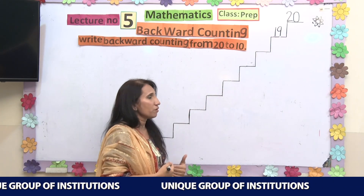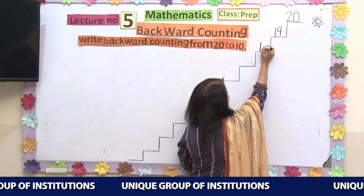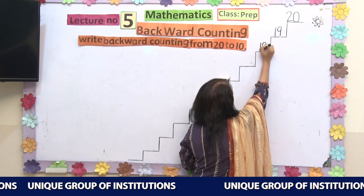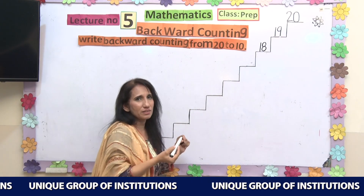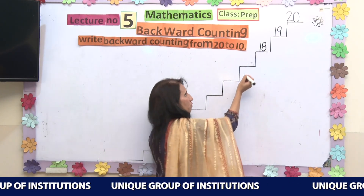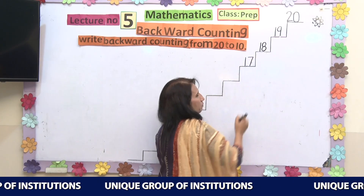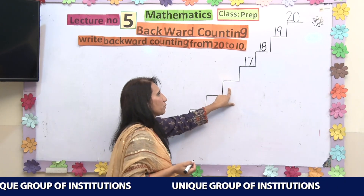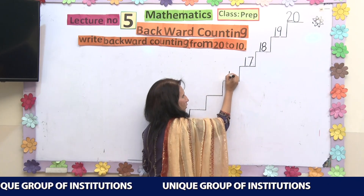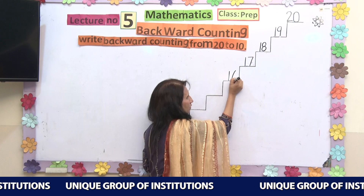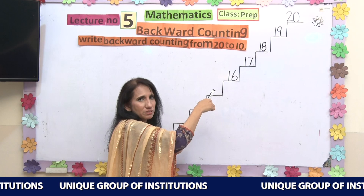What comes before 19? We have number 18. How we write 18? 1 and 8 will be your 18. So: 20, 19, 18. And what comes before 18? Before 18, we have number 17 — written as 1 and 7. Before number 17, what do we have? We will have number 16, written as 1 and 6. So: 20, 19, 18, 17, 16.